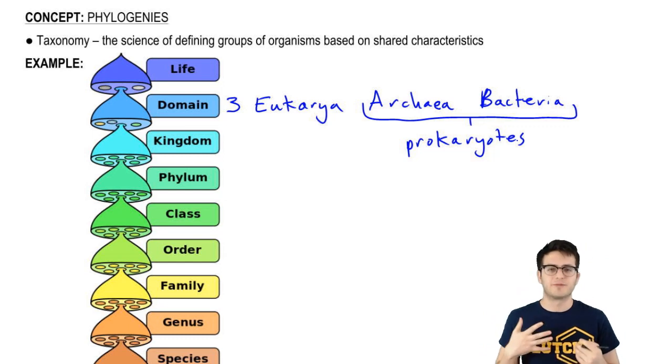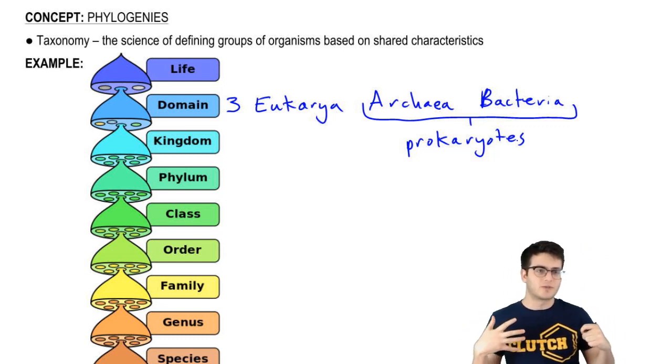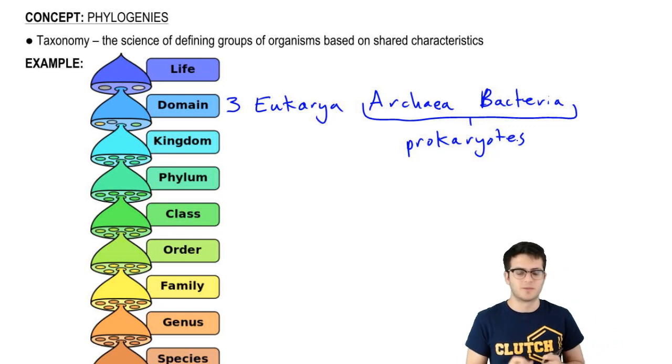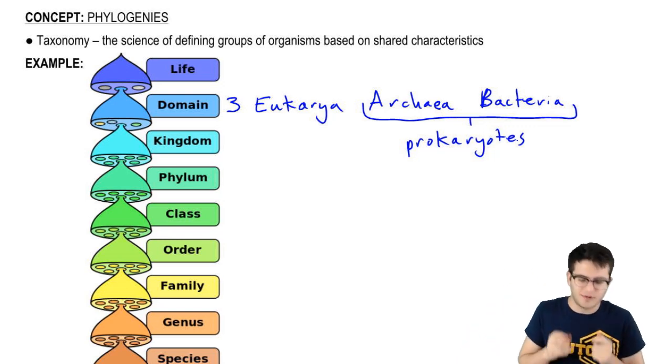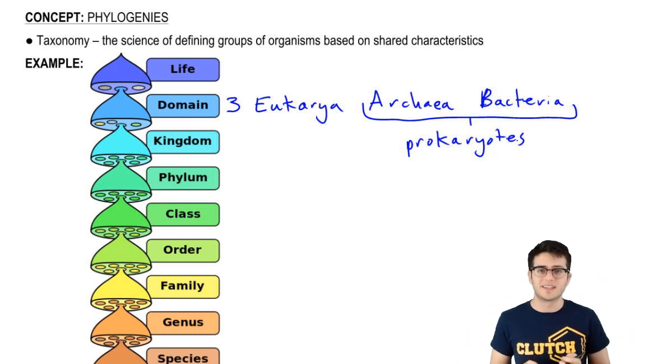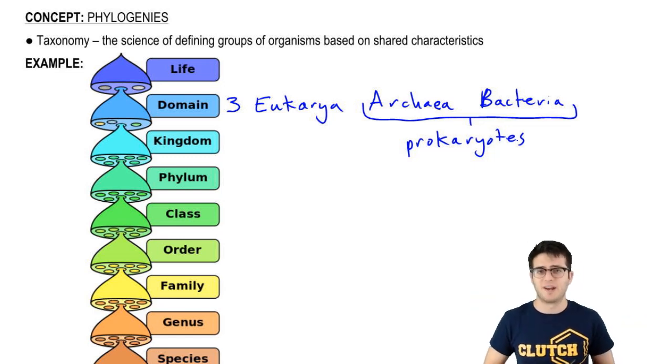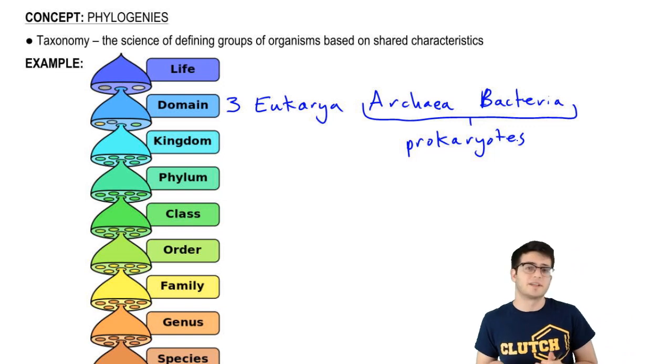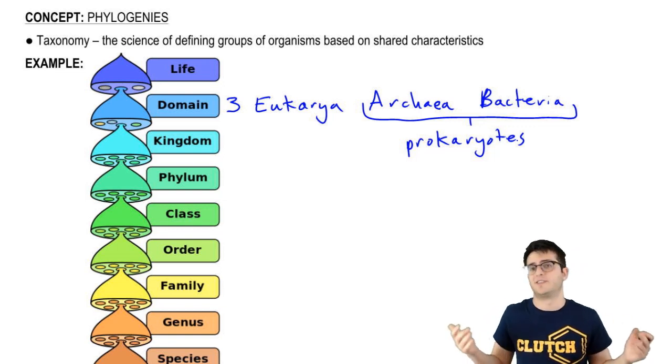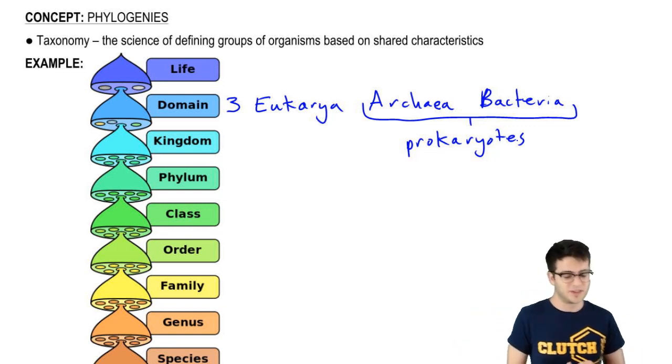Taxonomy is actually fraught with problems in terms of classification, and probably the best example of this is the protist kingdom, which is kind of the garbage heap for taxonomy. It's more or less where taxonomists put organisms that they just don't really know what to do with.